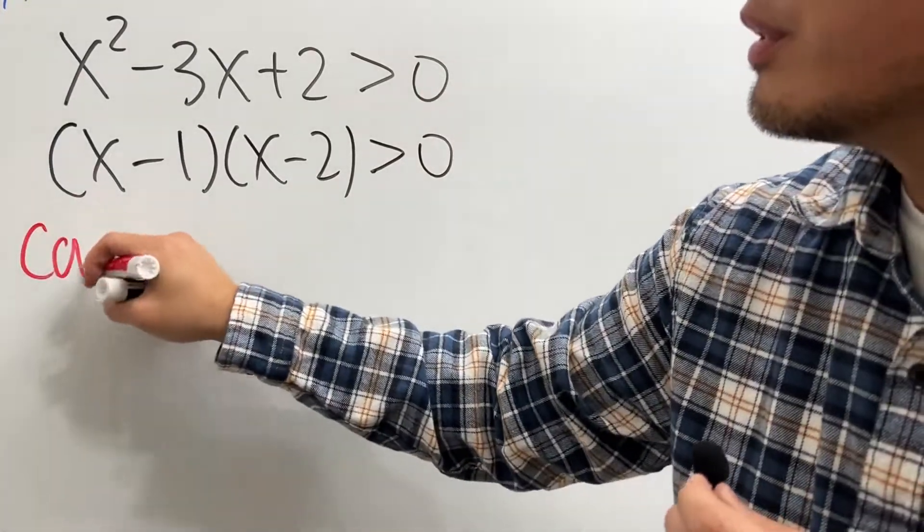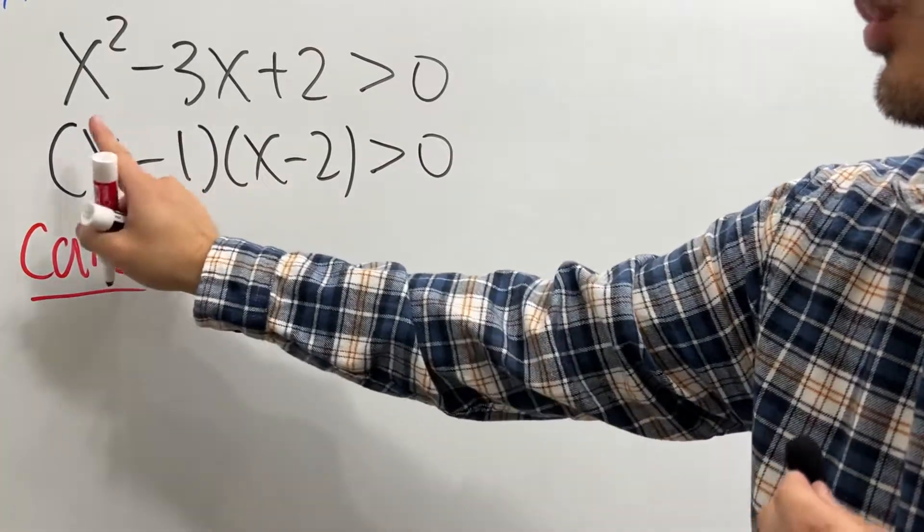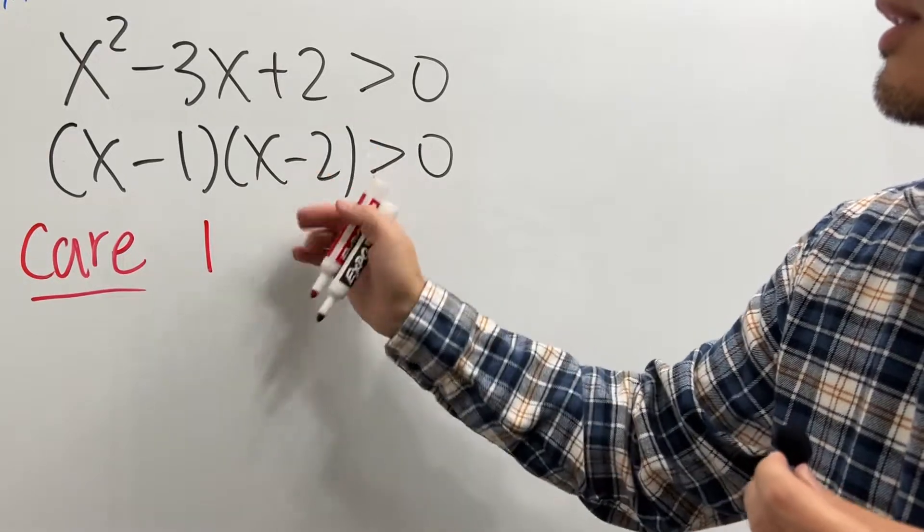Then, we are going to find out the numbers that we care. From here, make it equal to 0, x is 1. From here, make it equal to 0, x is 2.